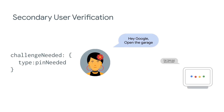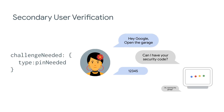Because security devices typically have settings that enable users to change the security level, all Smart Home actions for these devices must include secondary user verification. For security-based devices, we recommend using PIN needed for secondary user verification.